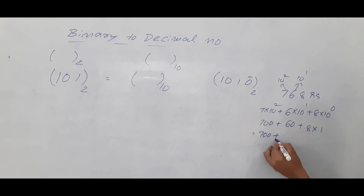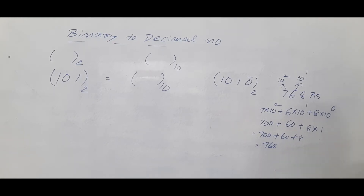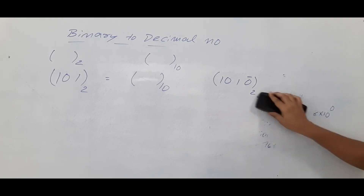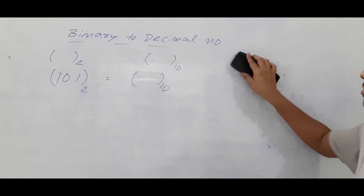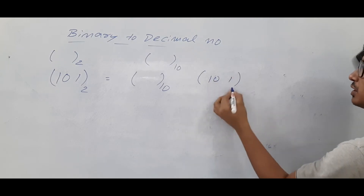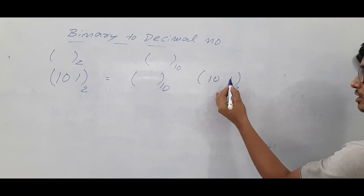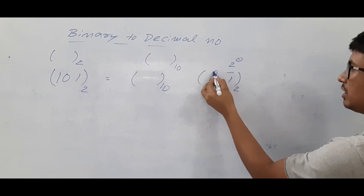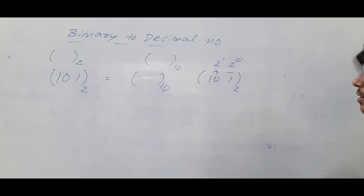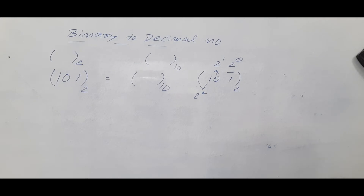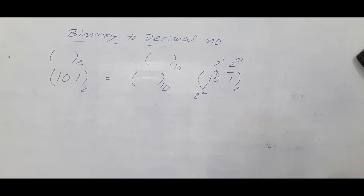So usually each digit has a weight, and similarly in binary each digit also has a weight. To convert 101 base 2 to decimal, the rightmost digit has weight 2⁰, the middle digit has weight 2¹, and the leftmost digit has weight 2².